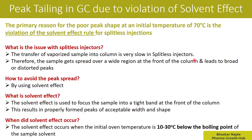The solvent effect occurs when the initial oven temperature is 10 to 30 degrees Celsius below the boiling point of the sample solvent. So you need to keep the initial column temperature around 10 to 30 degrees Celsius below the boiling point of the solvent used for preparation of the sample.